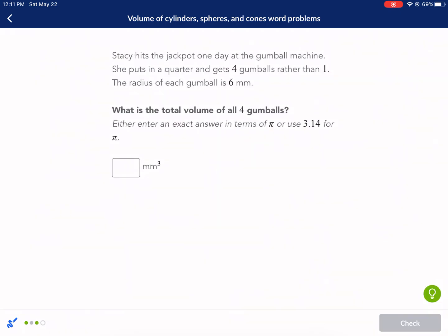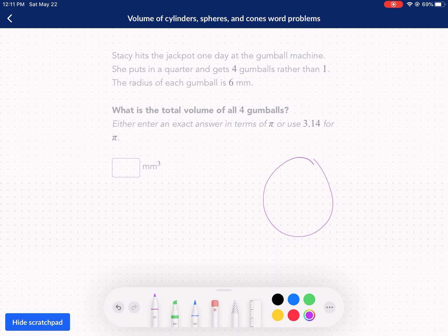I'm hoping this is a sphere. Gumballs. This is a sphere. Stacy hits a jackpot one day at the gumball machine. She puts in a quarter and gets four gumballs rather than one. The radius of each gumball is six millimeters. Here's our gumball. Looks something like that. Actually, that's not bad. First shot, that's pretty good. So six millimeters. She puts in a quarter and gets four gumballs rather than one. What is the total volume of all four gumballs? So we just have to find the volume of one multiplied by four.